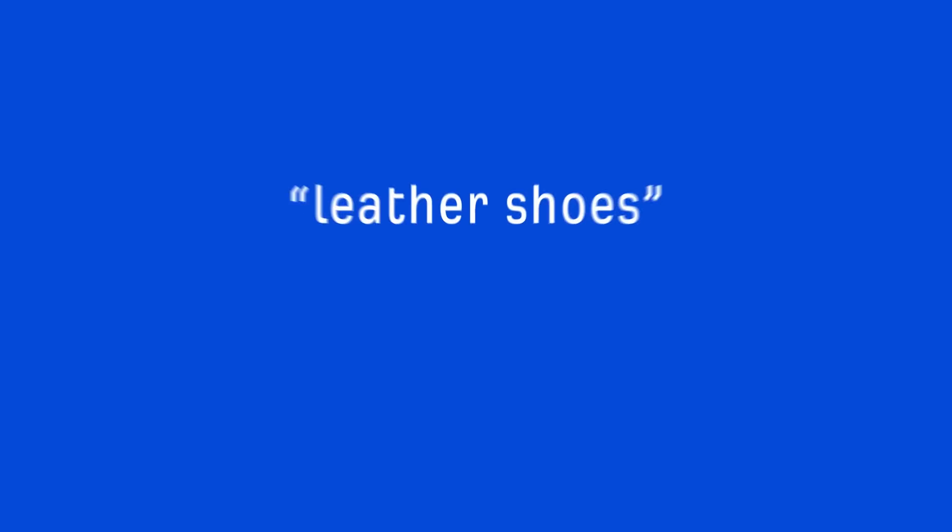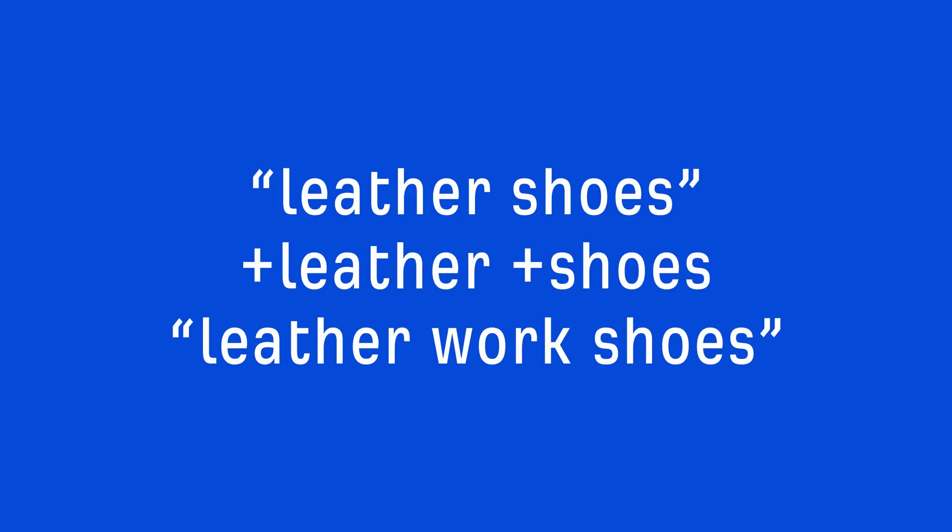Broad match modifiers ensure your ads are only shown for searches that include words you've marked with a plus sign. For example, if you were to bid on a keyword like 'leather shoes' wrapped in quotes, you're only bidding on queries that match that exact phrase. But if you bid on queries with broad match modifiers like +leather +shoes, then that would include queries like 'leather work shoes.' By using broad match modifiers, you can broaden your keyword pool without having to know the exact phrasing searchers are using.